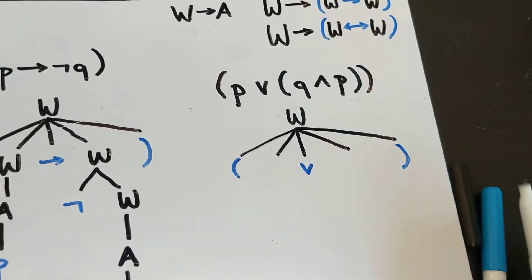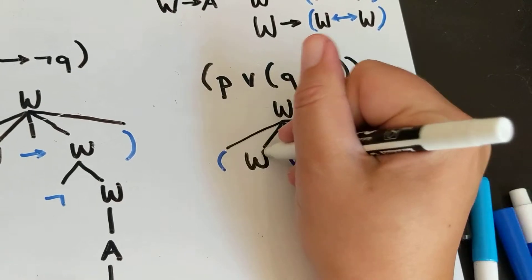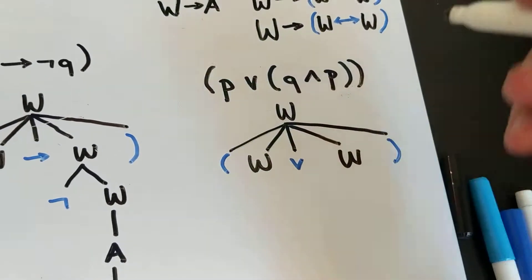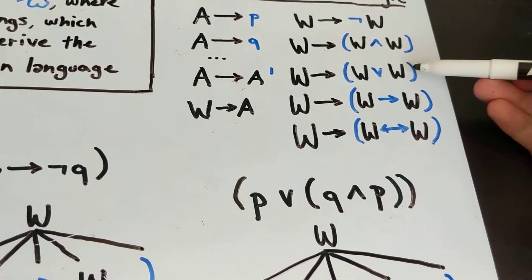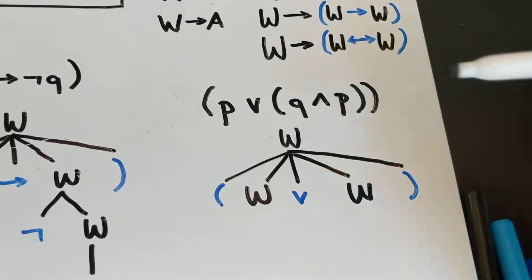Because we have a rule that lets us, this is our or rule, we have that rule. So we can replace this with this.